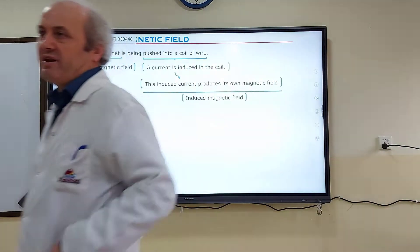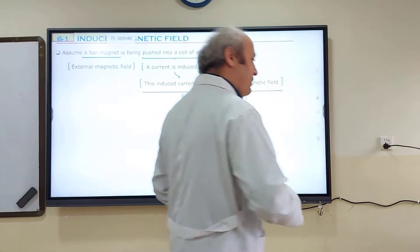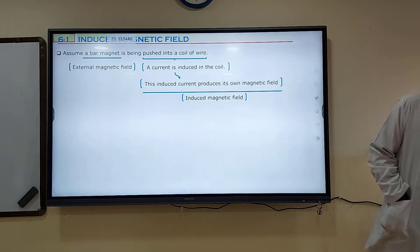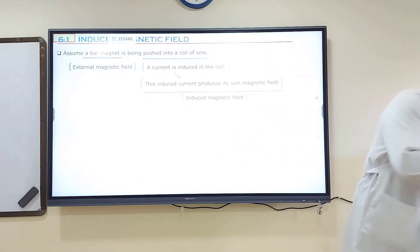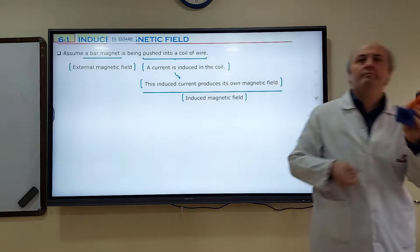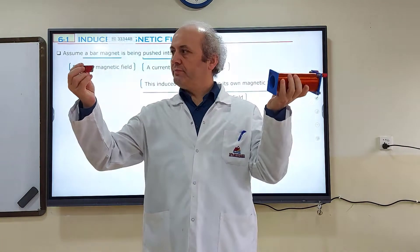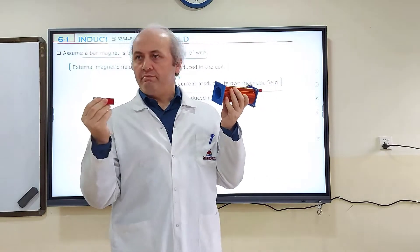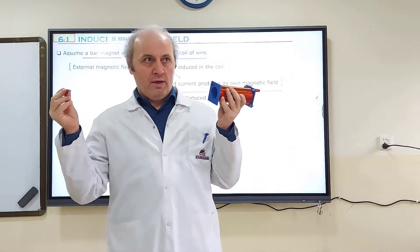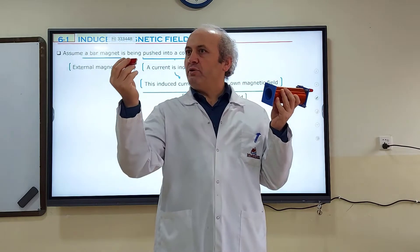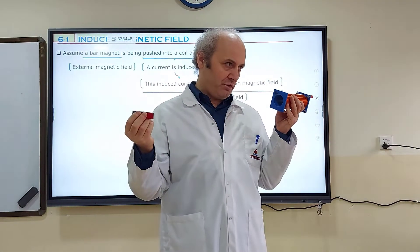What is an induced magnetic field? Let's talk about this. We have a coil and a magnet. The magnet has its own magnetic field. The magnet's magnetic field we are going to label as the B field, or external field.